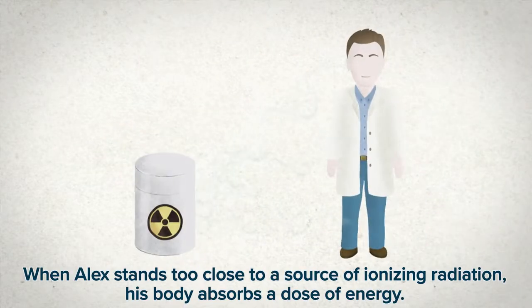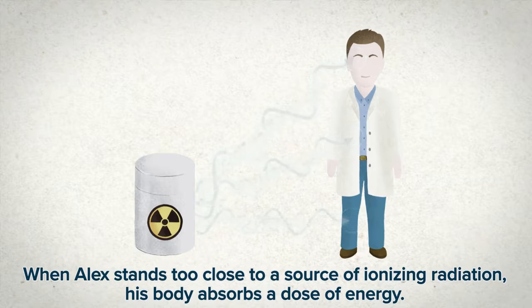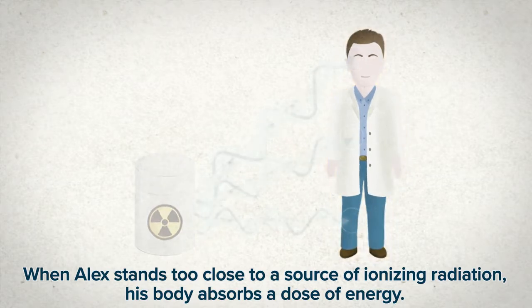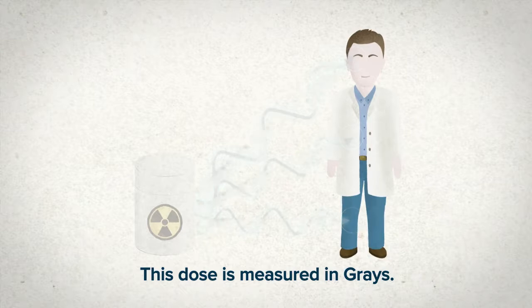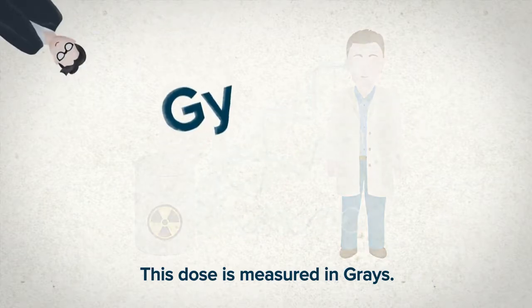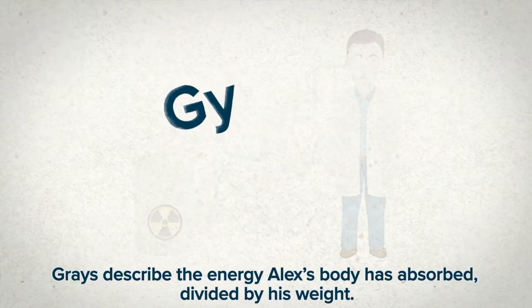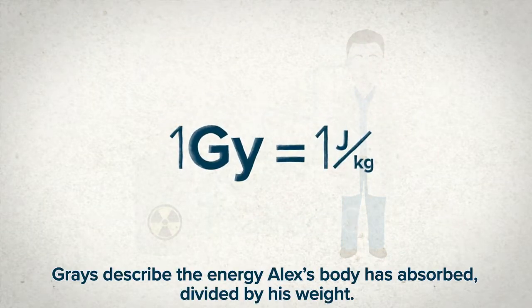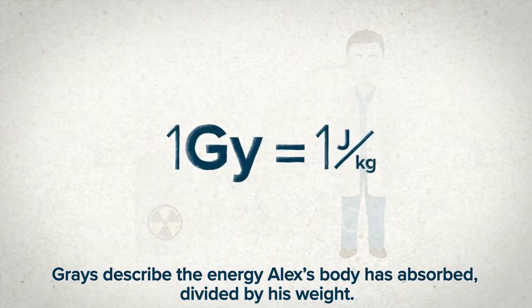When Alex stands too close to a source of ionizing radiation, his body absorbs a dose of energy. This dose is measured in grays. Grays describe the energy Alex's body has absorbed, divided by his weight.